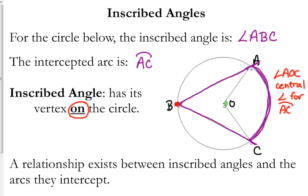Now, there is a relationship that exists between the inscribed angles and the arcs they intercept. We know that central angles have the same measure as the arc. So this angle is the same as the arc. This angle ABC, just in general, how does it look like it relates to the central angle? Bigger, smaller, the same?